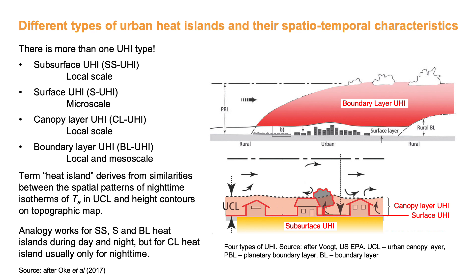So why the term heat island? It derives from similarities between the spatial pattern of nighttime isotherms of air temperature in the urban canopy layer and height contours on topographic maps. This analogy works well for the subsurface, the surface and the boundary layer heat island during day and night, but for the canopy layer heat island usually only for nighttime since daytime air temperatures across the city are less pronounced.